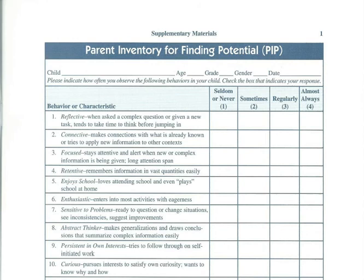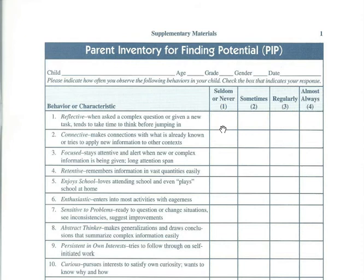There are multiple surveys within it. This is what the parent one looks like. It has where a parent would fill in who their student is, their age, grade, gender, and date. Then they're basically going to look at the different behavior characteristics described within the survey and rate their child on a scale of one to four — one meaning they seldom or never see that behavior characteristic, and four meaning almost always. A two is sometimes and a three is regularly. They can make a check mark or just put the number in the box, whatever is easiest for scoring.